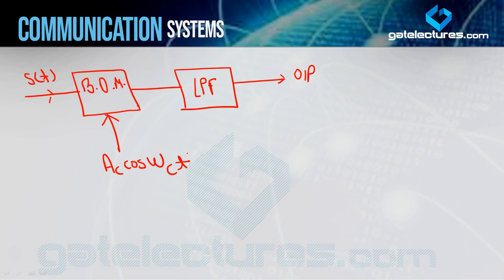This point is very important. If you use a different carrier, then you will create problems in your analysis. The carrier should be the same on the transmitter side and on the receiver side. Now the low pass filter passes the carrier signal in the range 0 to FM, similar to what we do with square law demodulation technique.